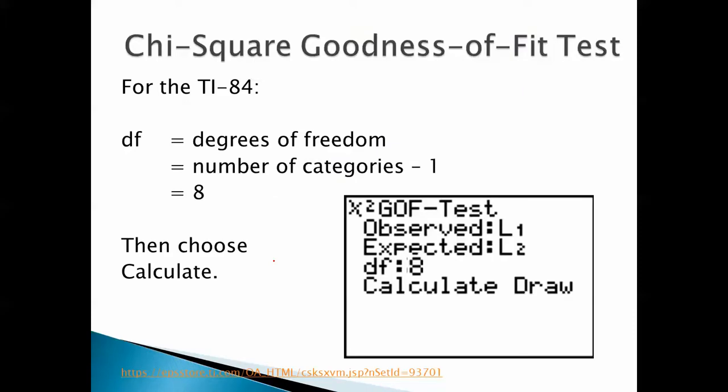Now for the TI-84, it's a lot easier. You just enter these data. Observed, L1. That goes in L1. The expected, that's L2. You've got to enter those in the calculator. And then you just enter the degrees of freedom, which in this case is 8. That's the number of categories minus 1. And then you just enter calculate. And that is so cool. But again, that's available on the TI-84. All you've got to do is stat, and then test, and then choose chi-square goodness-of-fit test. I wish I had a calculator like that. I don't.